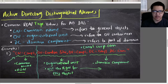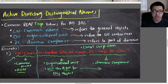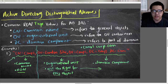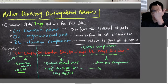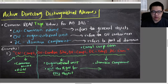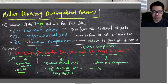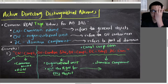Lastly, we've got the domain component, DC, which refers to a specific part of the domain. You take a domain like corp.com and divide it into individual components. So in that example, you've got two domain components: corp and com. You take the components separated by dots in the domain name and put them into separate DC values. If you had ad.corp.com, you'd have three domain components: ad, corp, and com.